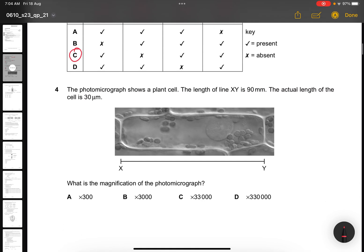Question 4. The photomicrograph shows a plant cell. The length of line XY is 90 millimeter. The actual length of the cell is 30 micrometer. What is the magnification of the photomicrograph? So basically 90 mm, I have to change it to micrometer, will be 90,000.